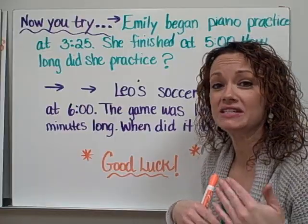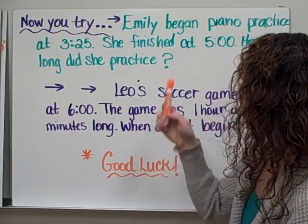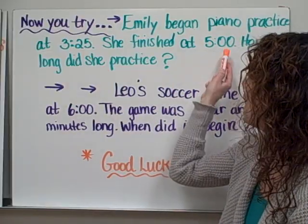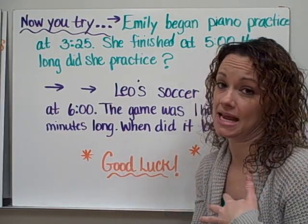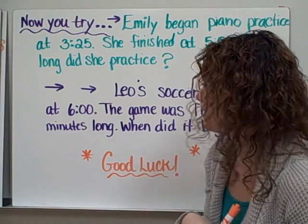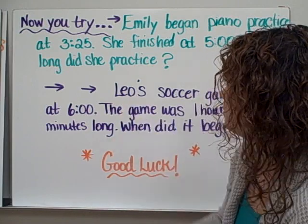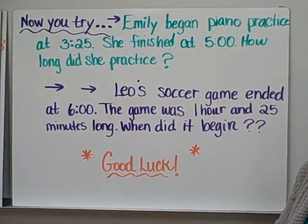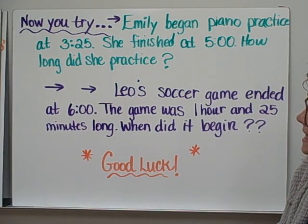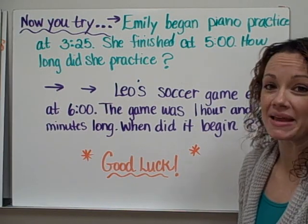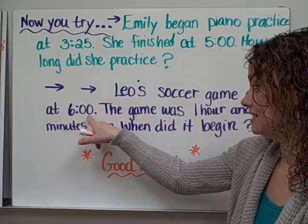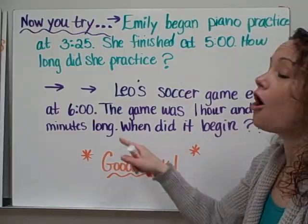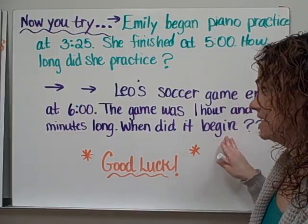This is a slightly different type of problem than our last one. Here we have our beginning time and our ending time — you need to find out how much time went by from beginning to end. Use your timeline to see if you can do that. And then our next example: Leo's soccer game ended at 6 o'clock. The game was 1 hour and 25 minutes long. When did it begin? We have the ending time and how long the game was, and we need to figure out the beginning time.